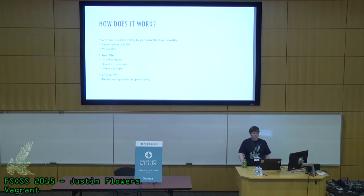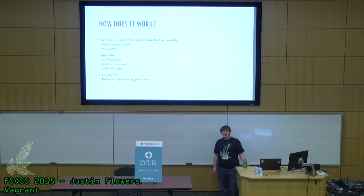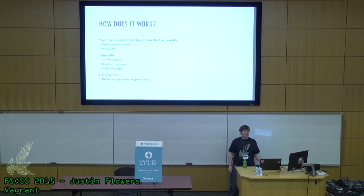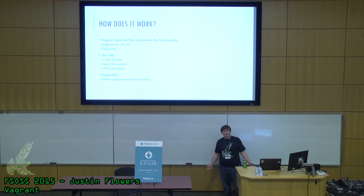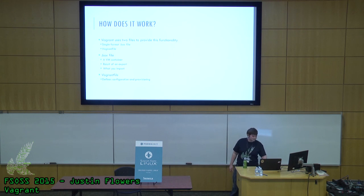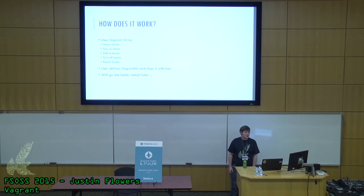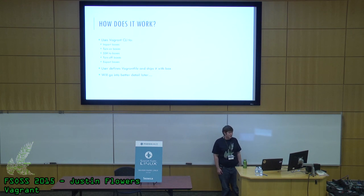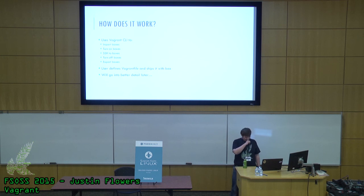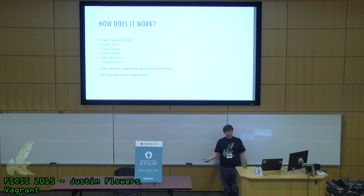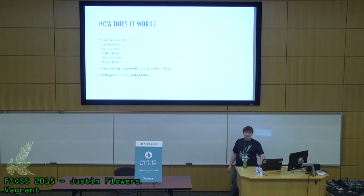So, how does Vagrant really work? It uses two files: a single-format .box file and a Vagrantfile, which is essentially for configuration. The box file is a VM container — it's the result of an export and what you'll be importing. To control Vagrant, you use a command line interface to import and export boxes, turn them on and off, and connect to boxes with SSH. All the user needs to define is the Vagrantfile and ship it with the box.